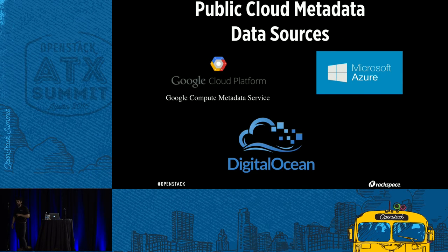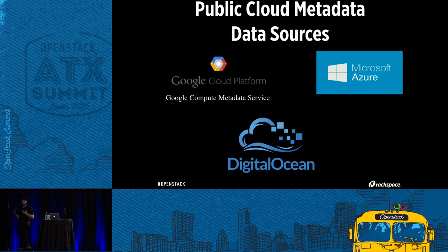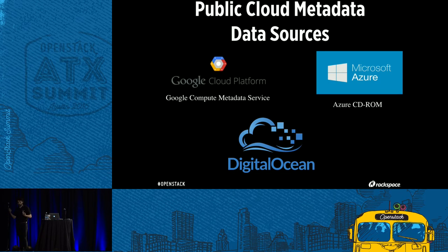Every single cloud has some sort of data source. Google Cloud Platform has the Google Compute Metadata Service — very similar to 169.254.169.254, requesting metadata over HTTP. Microsoft Azure has a config drive variant called CD-ROM, and DigitalOcean has the Droplet Metadata Service.